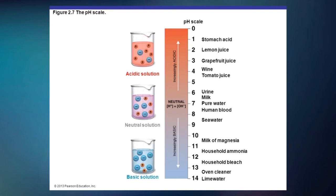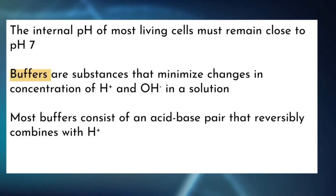Let's assume that you drink a cup of lemon juice. Will your body change to acid? That cannot happen because, as we learned before, pH affects the 3D structure of protein and makes it not able to function. Therefore, in our body there are solutions that help sustain pH close to 7. As the internal pH of most living cells must remain close to pH 7, buffers minimize changes in concentration of H⁺ and OH⁻.